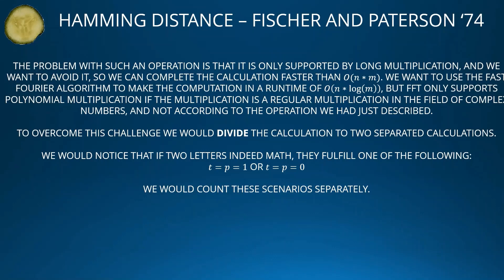We want to complete the calculation faster than O(N × M) and use FFT to achieve O(N log M) runtime. But FFT only supports polynomial multiplication using regular multiplication in the field of complex numbers, not according to the custom operation we just described. To overcome this challenge, we divide the calculation into two separate calculations.